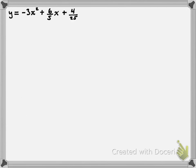So why don't we do another example? This time let's take a look at y is equal to negative 3x squared plus 6 over 5x plus 4 over 25. Again, you'll notice there are fractions. It's going to be the same process, but we'll need to do some operations with fractions. The first step is to bracket off the first two terms, and the second step is to common factor out the leading coefficient, which in this case is negative 3.